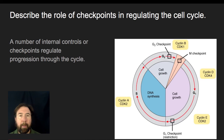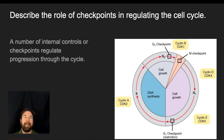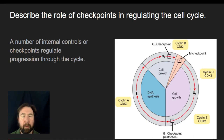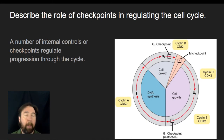These checkpoints make sure that everything has been proceeding accurately and adequately in order to move to the next step. If something is going wrong at a checkpoint, it can either pause the cell cycle, or it could send the signal that this cell is not behaving properly and it may be a target for apoptosis.